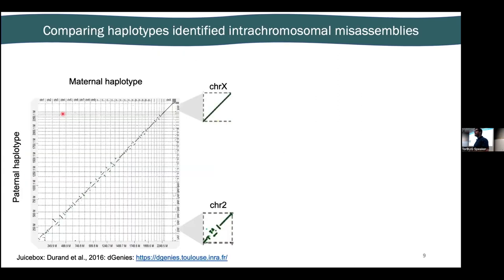We took advantage of the fact that our assembly is diploid and aligned our maternal and paternal haplotypes together, and saw that there are a lot of intrachromosomal misassemblies. In a genome-wide dot plot, we want to see something like chromosome X — a nice diagonal line showing that each haplotype agrees. But in a lot of chromosomes we see something more like chromosome 2, where parts of the diagonal line suggest consistent assembly but the middle section is a problem.